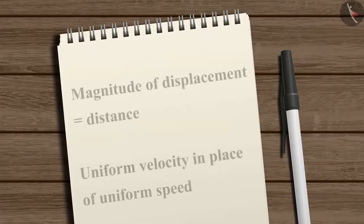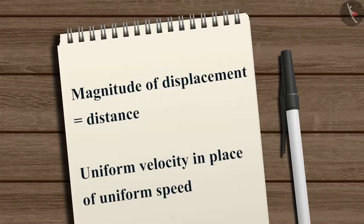If the magnitude of displacement is equal to the distance traveled by the object, then we can use the term uniform velocity in place of uniform speed.